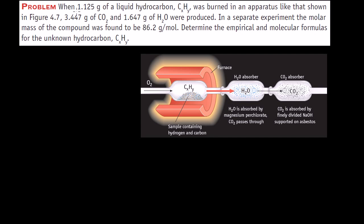Our problem tells us that when 1.125 grams of a liquid hydrocarbon, CxHy — we don't know how many C's and H's there are, so it's a mystery liquid hydrocarbon — was burned in an apparatus like that shown in figure 4-7. This is our mystery hydrocarbon combusting with oxygen. It tells us that 3.447 grams of carbon dioxide and 1.647 grams of water were produced.